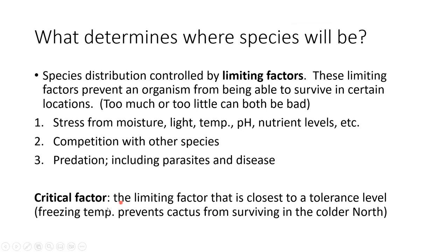Among all limiting factors, the one closest to the organism's threshold is known as the critical factor — the most important one. For example, freezing temperatures prevent cacti from surviving in colder regions. They might handle the light and moisture, but temperature is the big one — so for a cactus, temperature would be the critical factor.